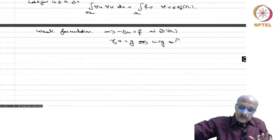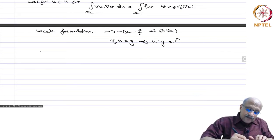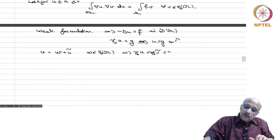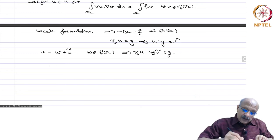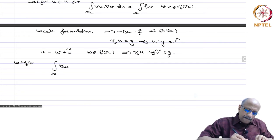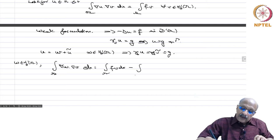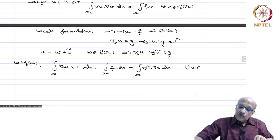For existence, we write u as W plus u-tilde where W belongs to H^1_0(omega). This implies gamma_0(u) equals gamma_0(u-tilde) equals g. Substituting into the weak formulation gives: find W in H^1_0(omega) such that integral over omega of grad W · grad v dx equals integral over omega of f v dx minus integral over omega of grad u-tilde · grad v dx, for every v in H^1_0(omega).